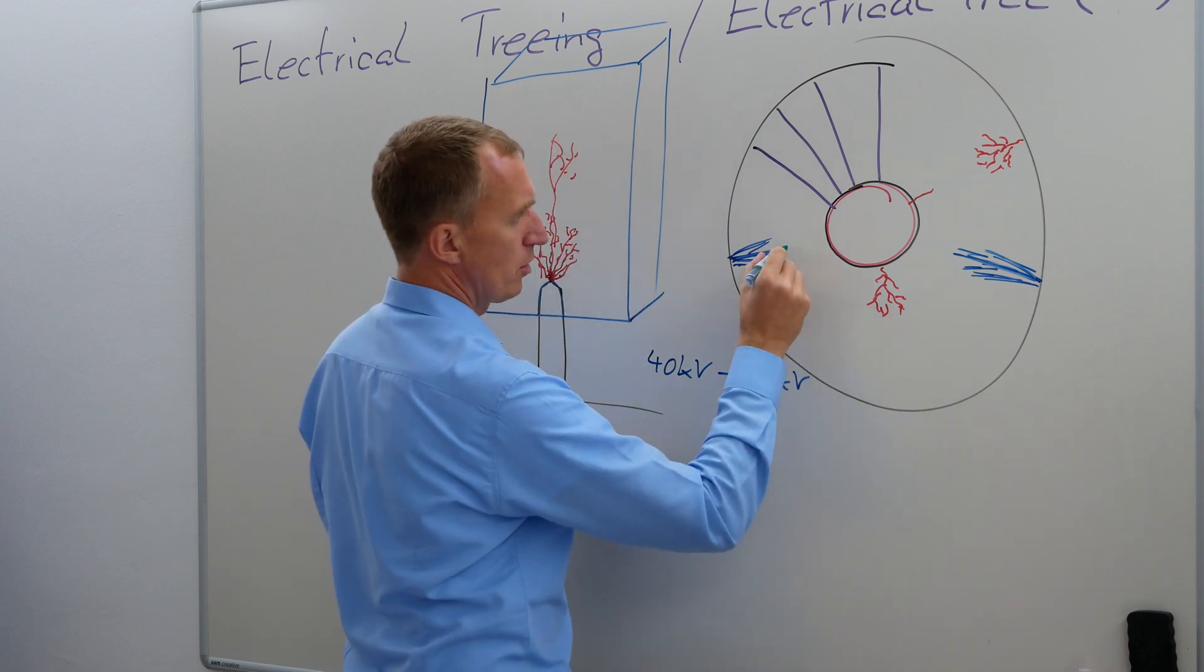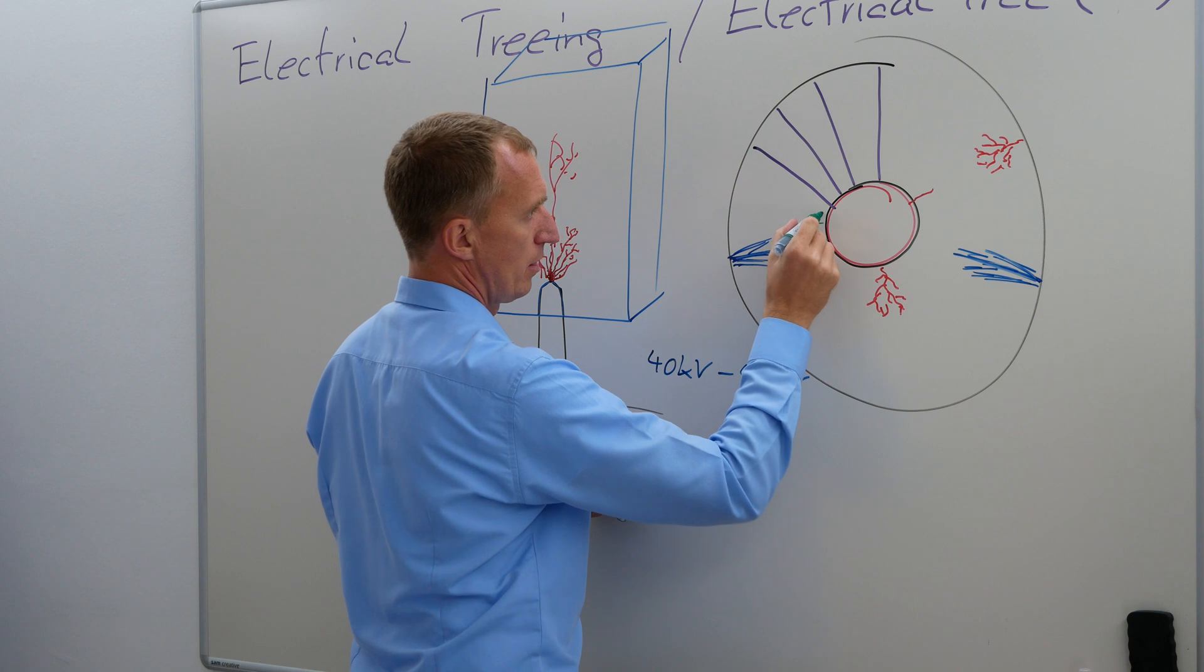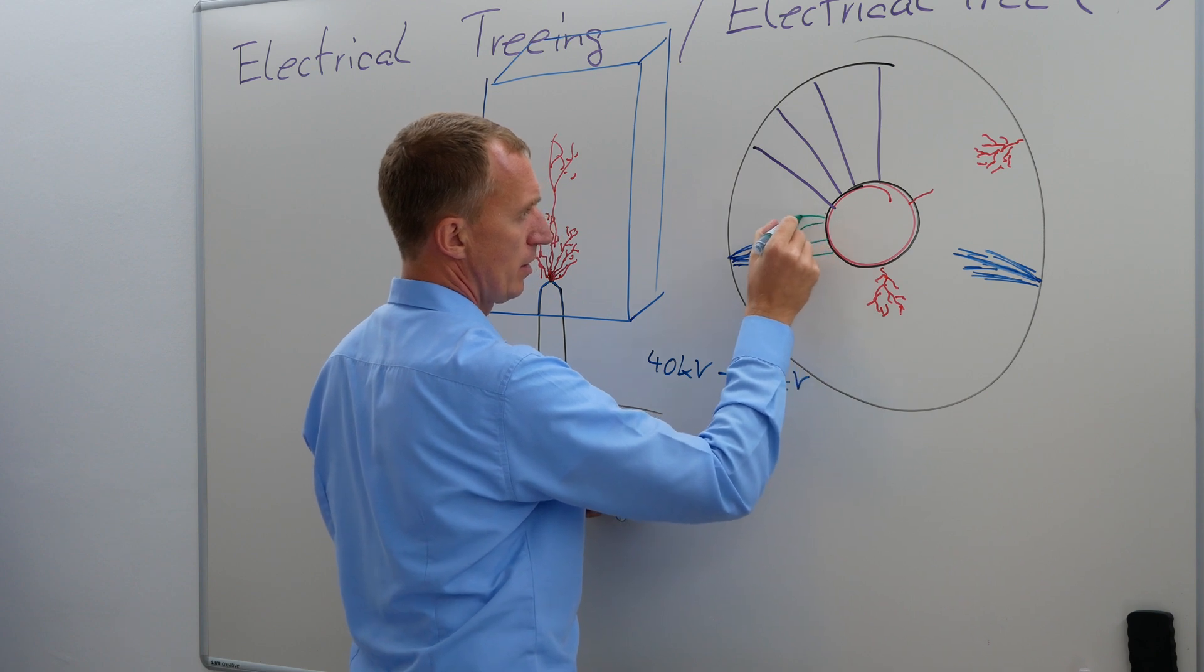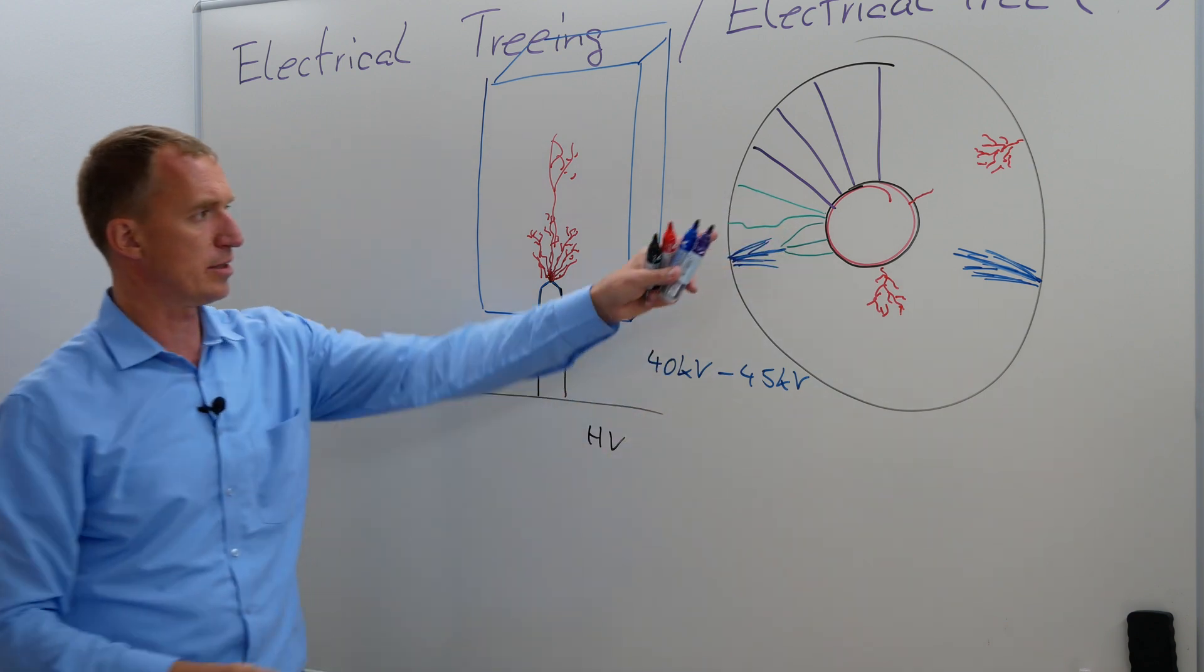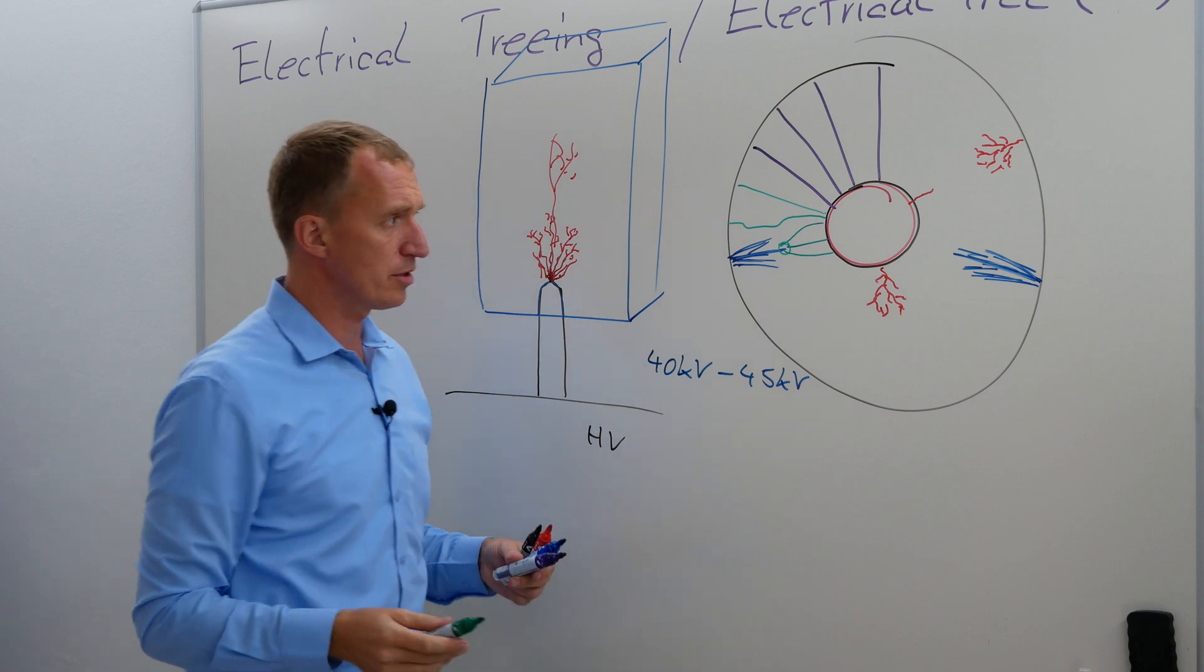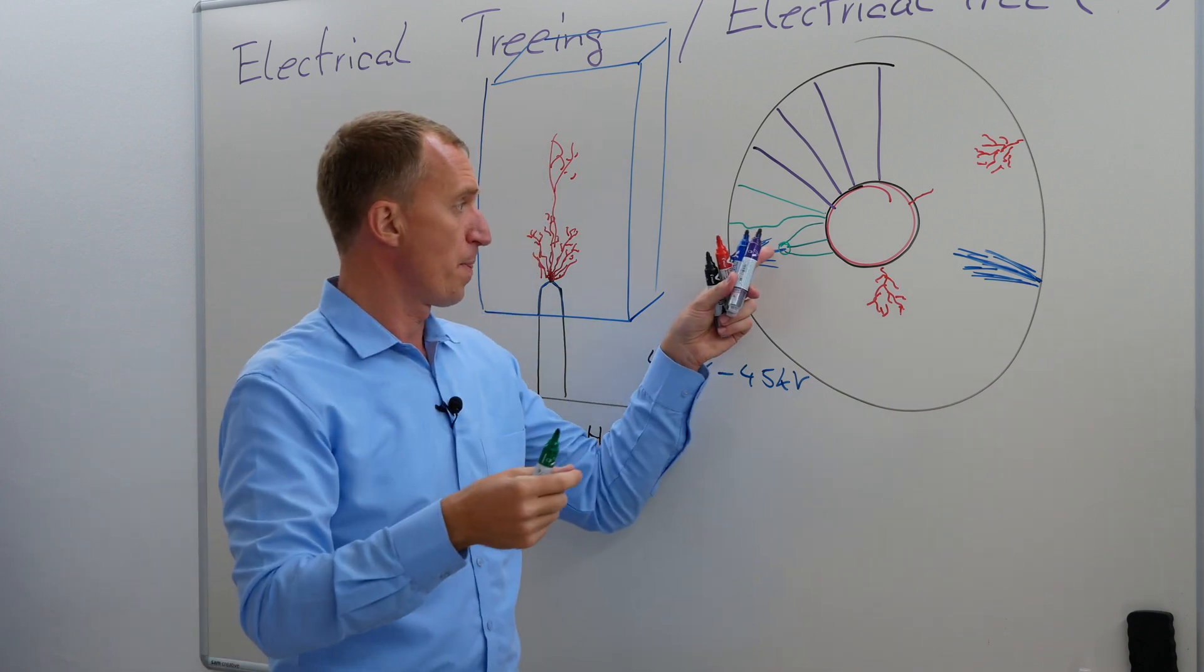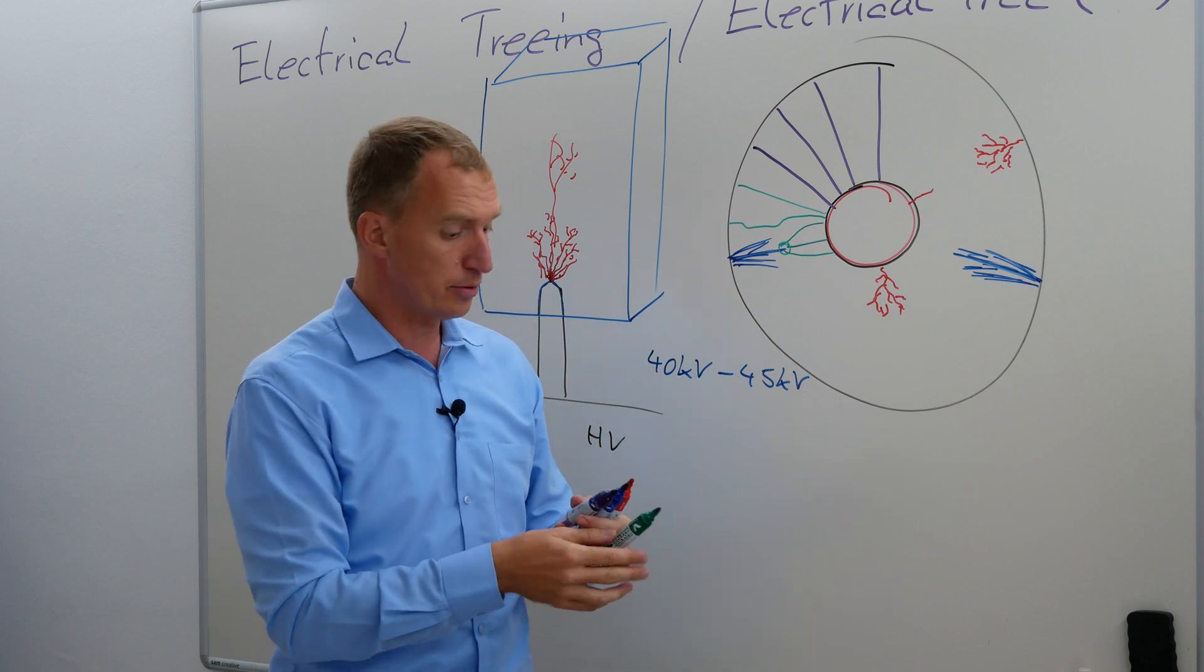But if you have something like this, we might get a concentration of electrical field lines. And then, obviously, I do not really know how the electrical field lines look here, but they will look different. And here, obviously, I was drawing something which I would consider to be a concentration of electrical field lines, and then the electrical tree could start.